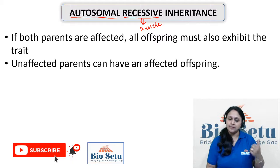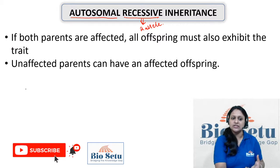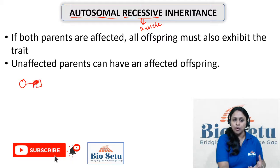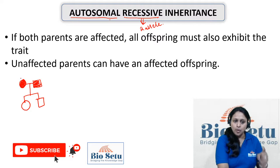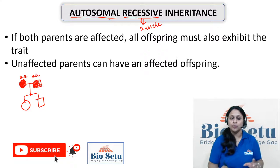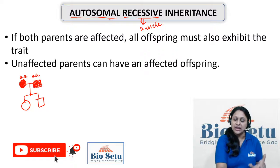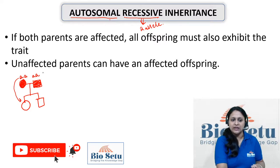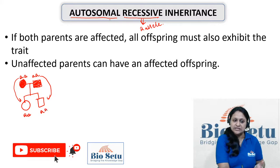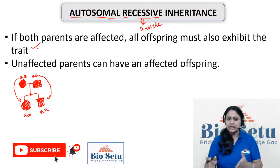The first key point of Autosomal Recessive Inheritance: if both parents are affected, all offspring must also exhibit the trait. This is obvious — if both parents are affected by an autosomal recessive disease, their genotype is homozygous recessive. They have no option but to pass on the recessive allele to their progeny, so 100% of all offspring will be affected.